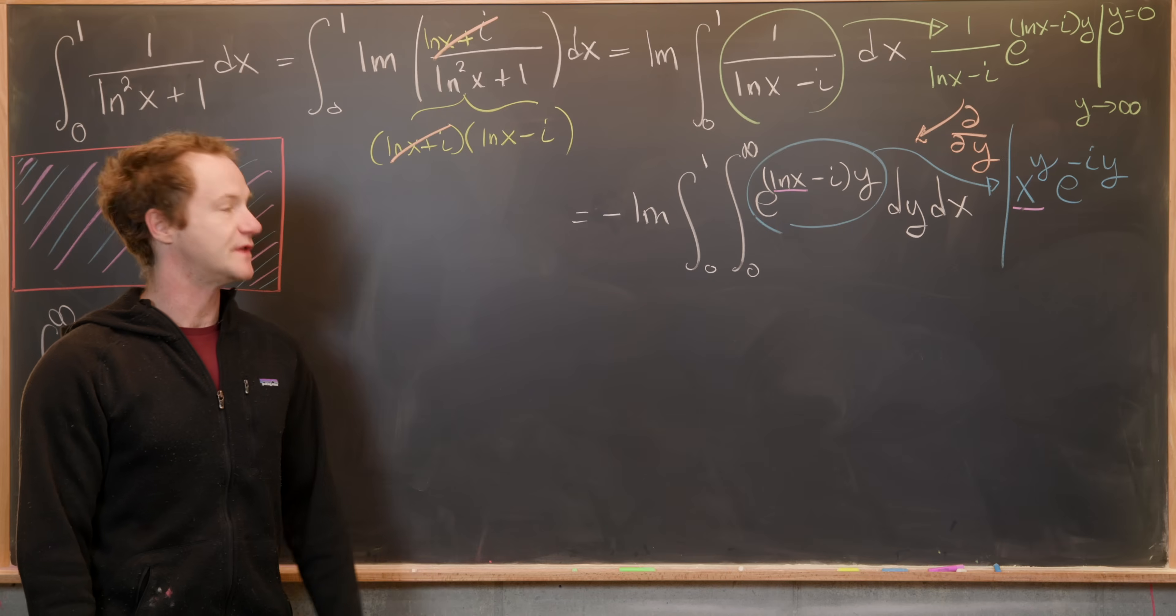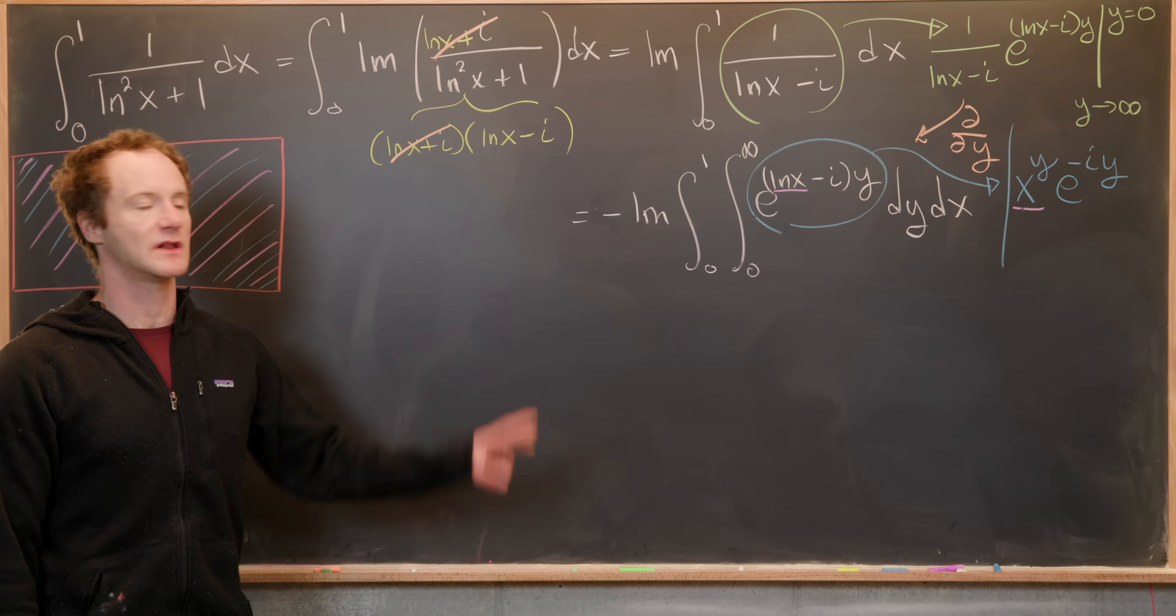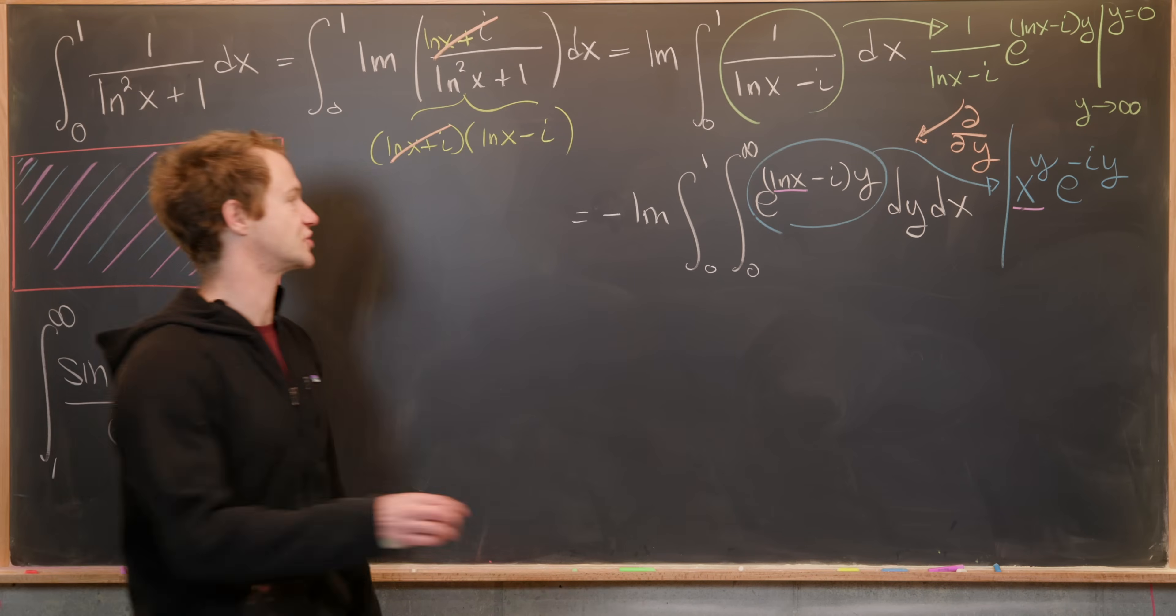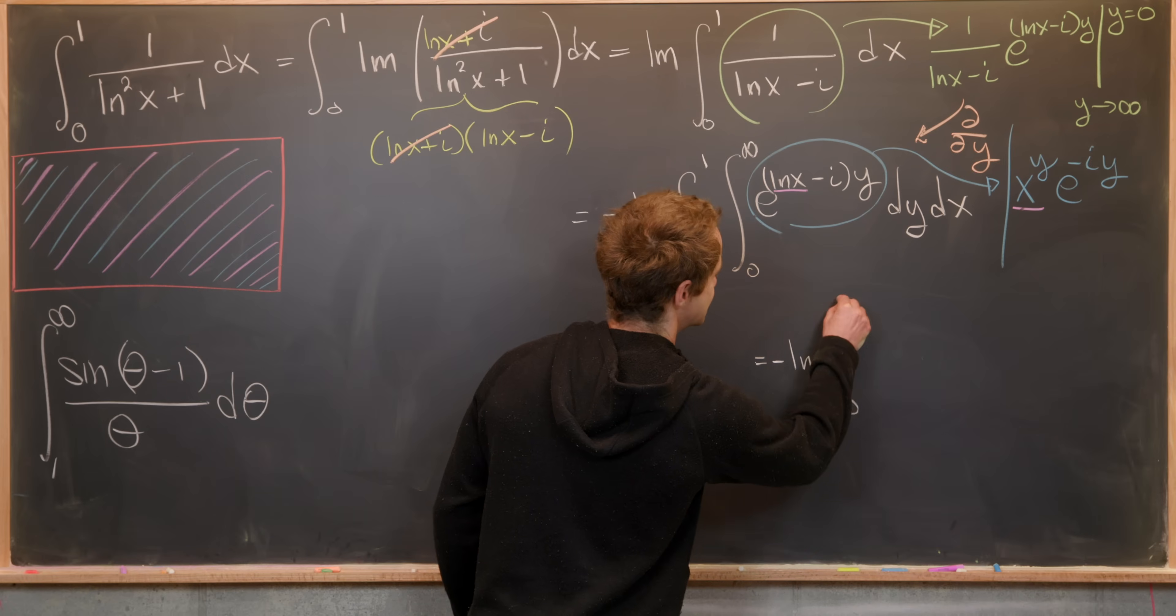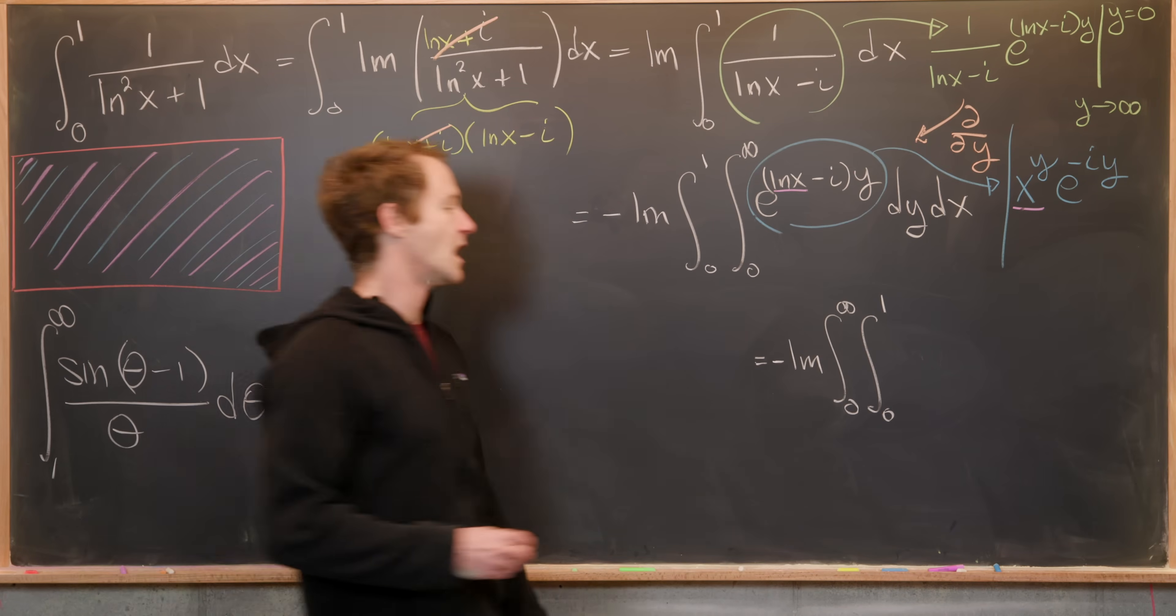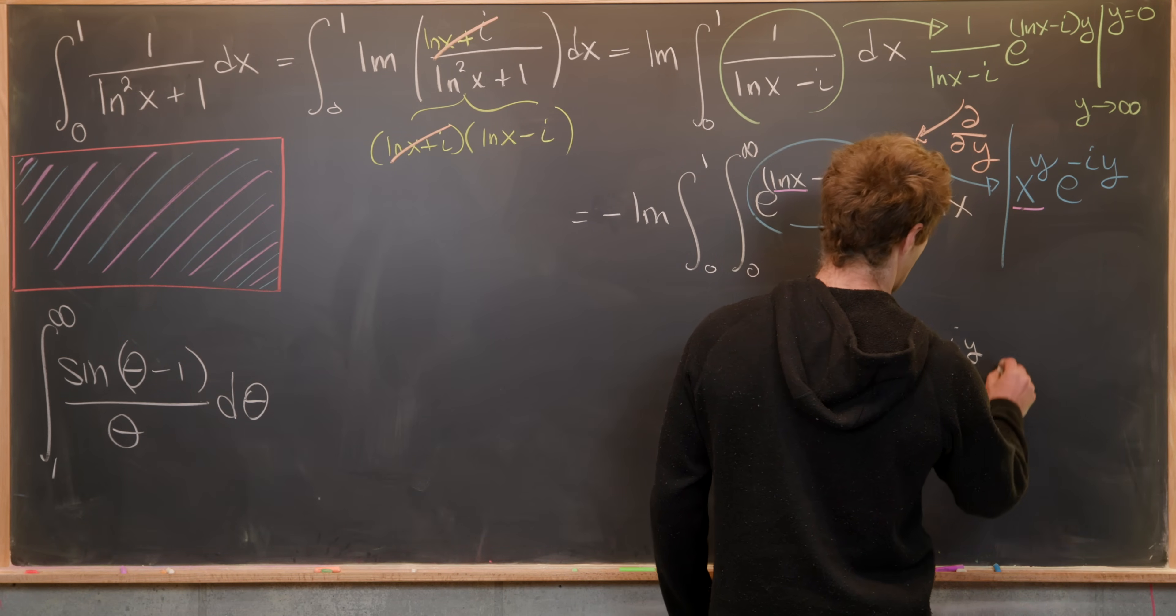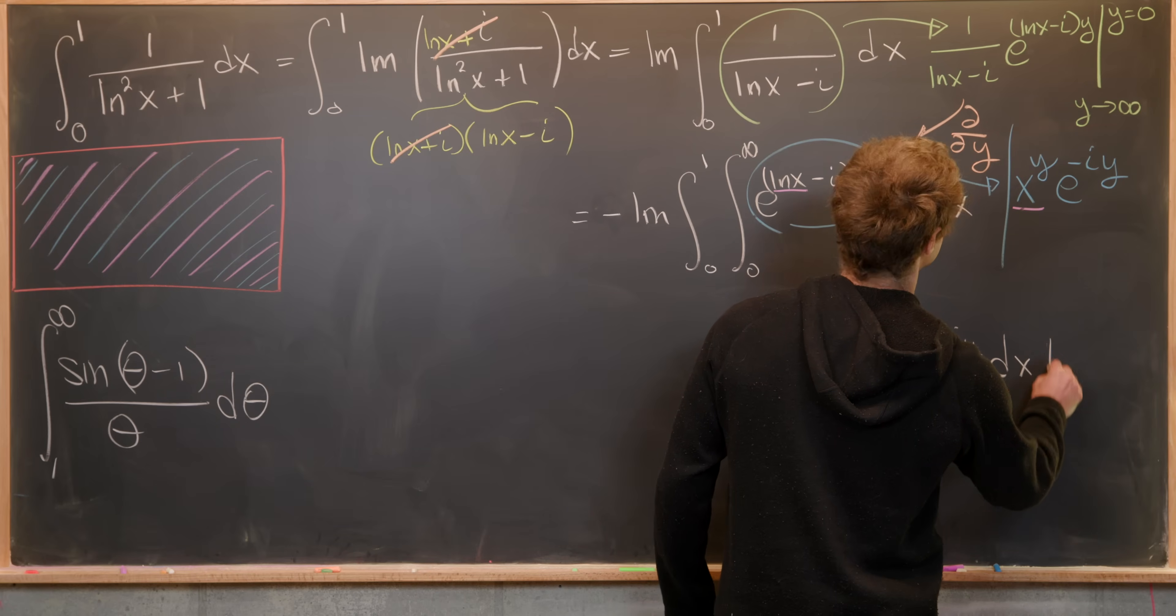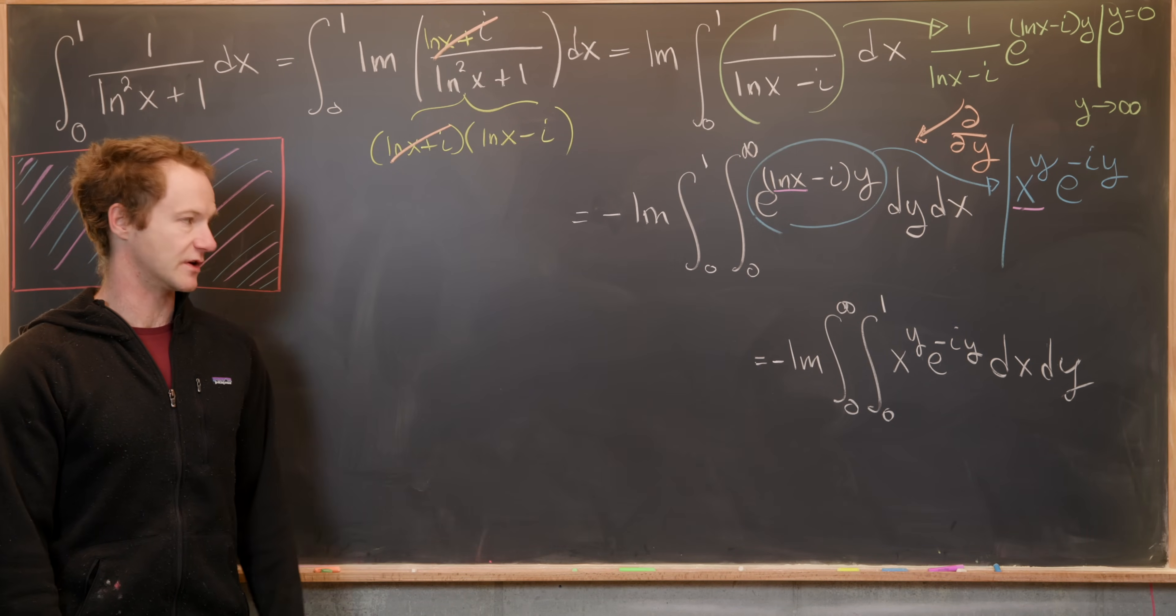So now we'll do two things. We'll substitute this blue version of the function into the integral and we'll change the order of integration. That's going to give us minus the imaginary part, the integral from zero to infinity, the integral from zero to one, of x^y e^(-iy) dx dy. So again, we changed the order of integration right there.